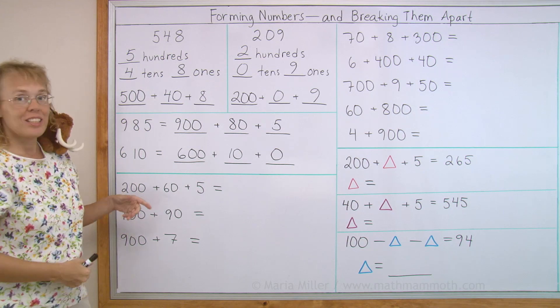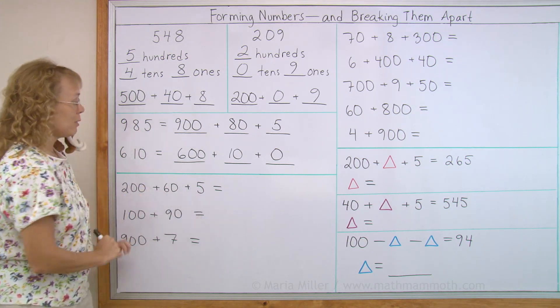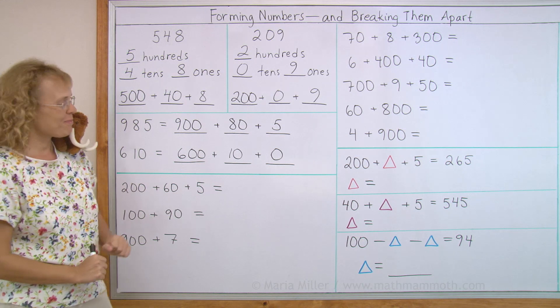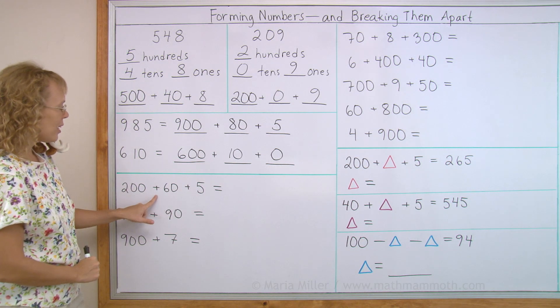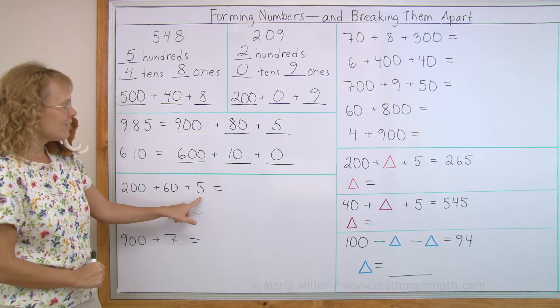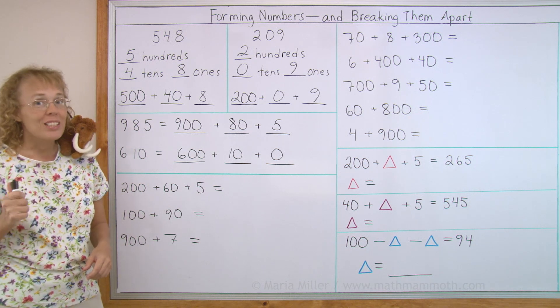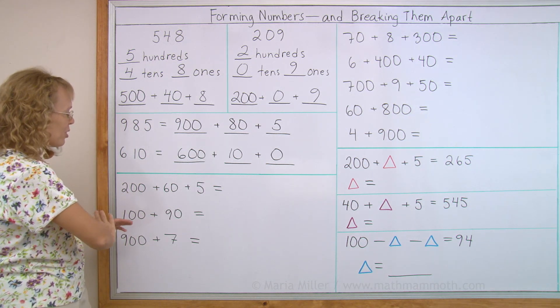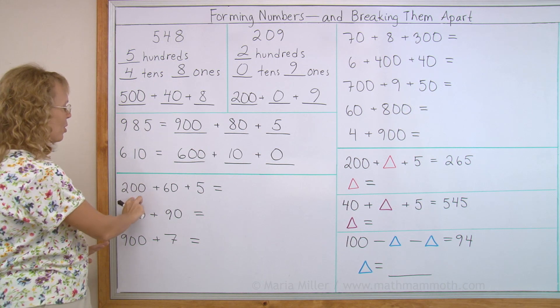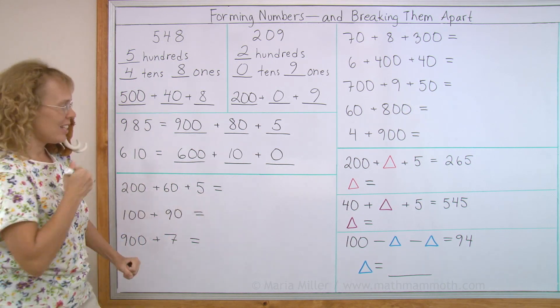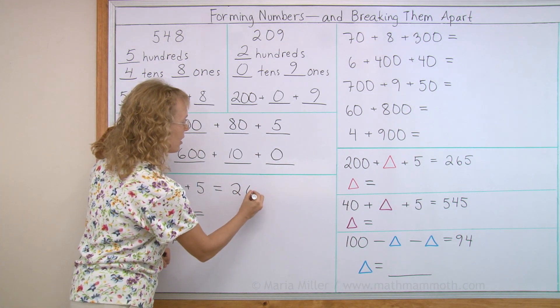Now let's do it the other way around. Here are the parts, and we need to write the number. Two hundred plus sixty plus five. That's also pretty easy, because all you need to do is ignore the pluses and say it, two hundred sixty-five, and then write it as two, six, five.